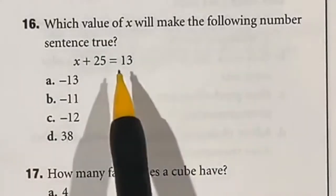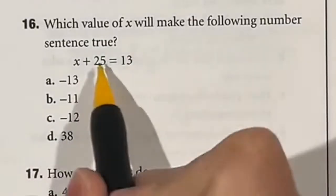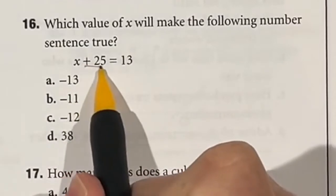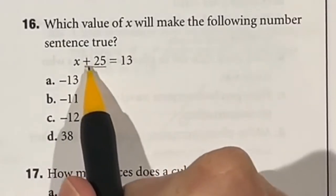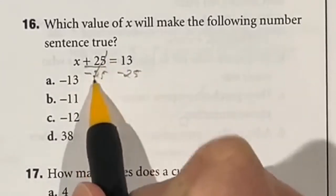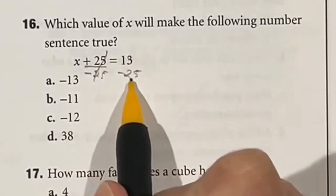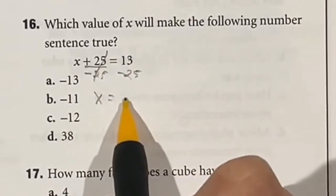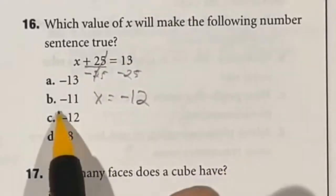Number 16 is just a one-step problem for algebra, so all we have to do here is the opposite of adding to get x by itself. The opposite of adding is subtracting, so we're going to subtract 25 from both sides. That's going to cancel out 25 over here, but 13 minus 25 tells us that x is equal to negative 12, which is answer C.